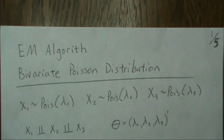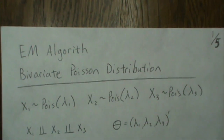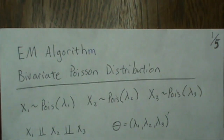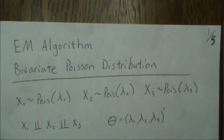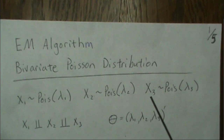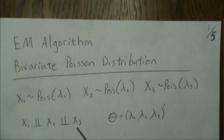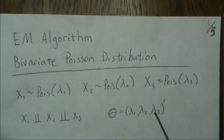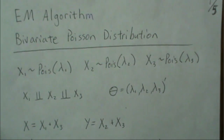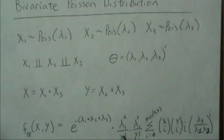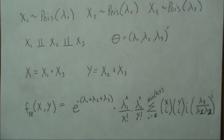Here's another example using the EM algorithm. We're going to look at the bivariate Poisson regression model. For a quick setup: if we have three independent Poisson random variables, we let theta equal the vector of parameters, and we let X equal X1 plus X3 and Y equal X2 plus X3. Then we get what's called the bivariate Poisson model, or at least one rendition of it.